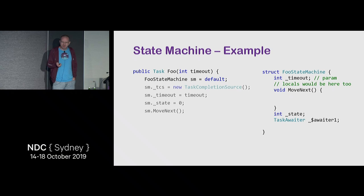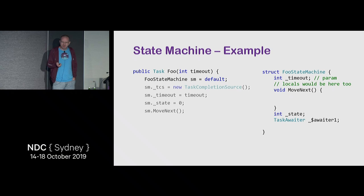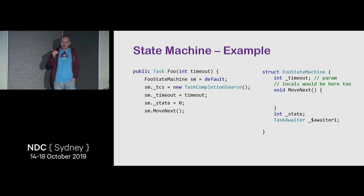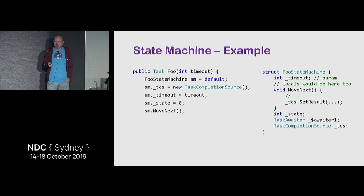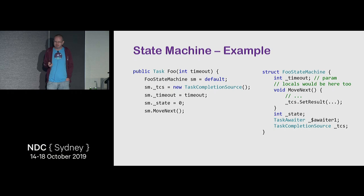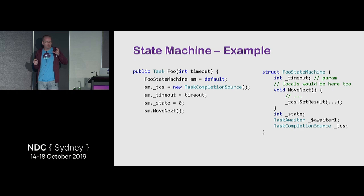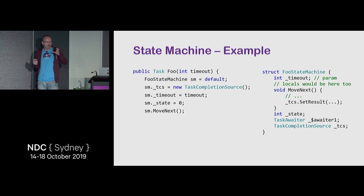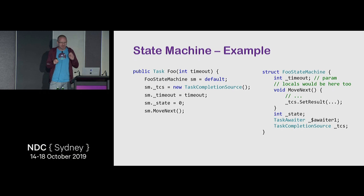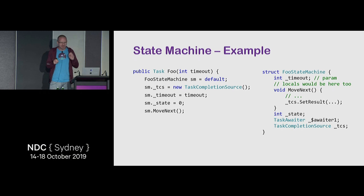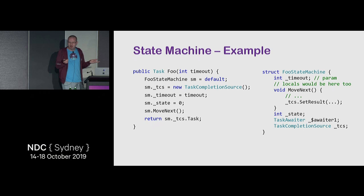The state machine also needs a TaskCompletionSource field to return a Task. MoveNext calls SetResult on it when done. To return the Task, you return the task from inside the TaskCompletionSource. However there are two problems: performance. There are two allocations per call — one for the TaskCompletionSource and one for the Task inside it. For something like a BufferedStream reading one byte per call, that's two object allocations per call, which is not great.